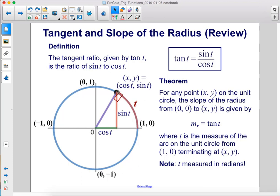For any point (x, y) on the unit circle, the slope of the radius from (0, 0) to (x, y) is given by m_r equals tan t, where t is the measure of the arc on the unit circle from (1, 0) terminating at (x, y). Note: t is measured in radians.